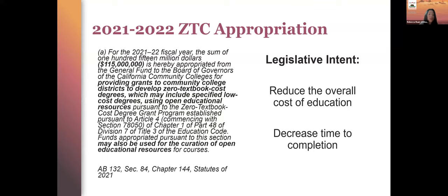The ZTC grant program is $115 million—a historic one-time investment into our system to support the development and implementation of ZTC degree and certificate programs. The legislative intent for this funding is clear: reducing costs and decreasing time to completion. The statute also emphasizes the importance of non-duplication and programs resulting in the greatest number of degrees benefiting the greatest number of students. This investment—we want to see impact on our students in a tangible way, and we want to maximize that impact.